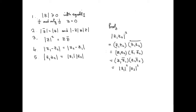So we have |z1·z2|² equal to |z1|² times |z2|². Taking positive square roots of both sides — which is valid since all quantities are positive — we get |z1·z2| equals |z1| times |z2|. That gives us property 5.